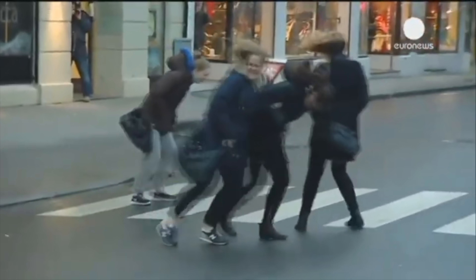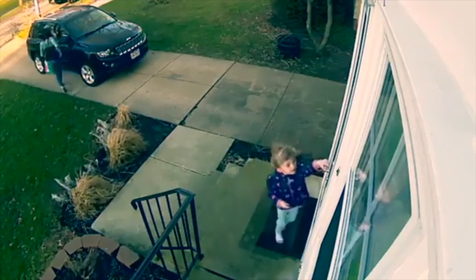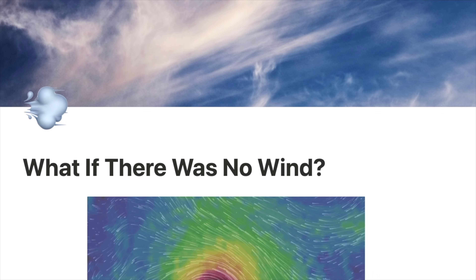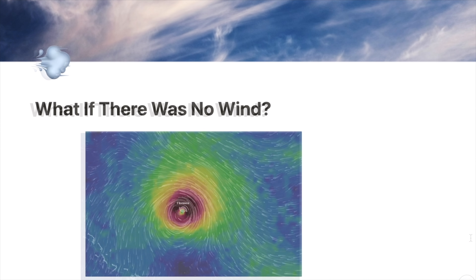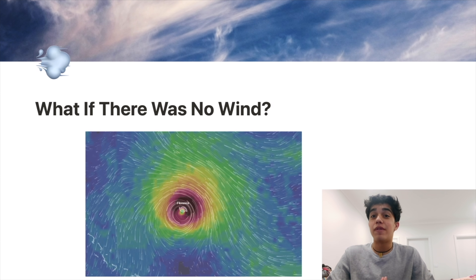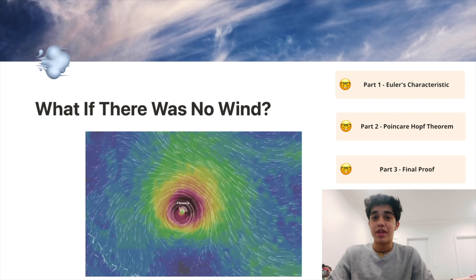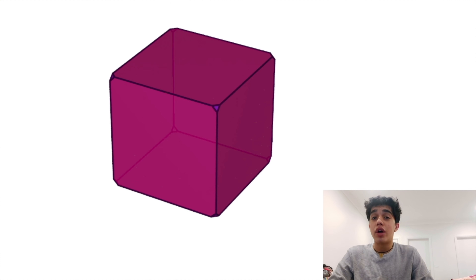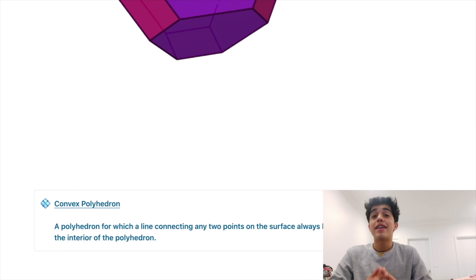From a bad hair day to a tragic natural disaster, wind can be extremely disruptive. But what if wind didn't exist? Would airplanes still fly? Can birds still fly? What if I tell you that there is always at least one place on Earth where there is no wind? In this video we'll be going through the concept of Euler's characteristic and the Poincaré-Hopf theorem, combining all of that into another known theorem to understand why.